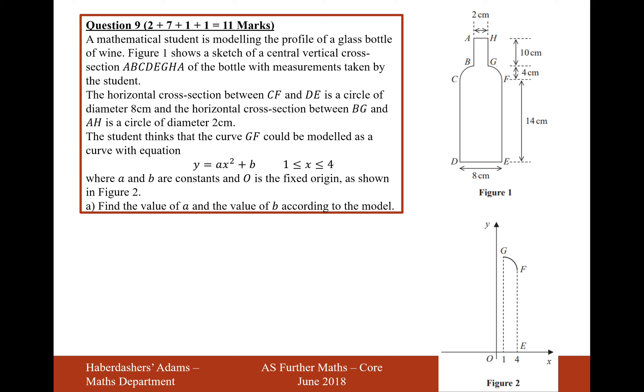Is there an F in there? Oh, there's supposed to be an F in there, but hey-ho. Of a bottle of measurements taken by the student. The horizontal cross-section between C, F and D, E is a circle of diameter 8 centimetres and a horizontal cross-section between B, G and A,